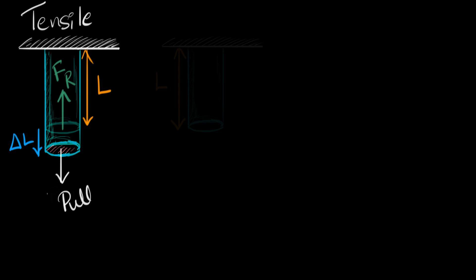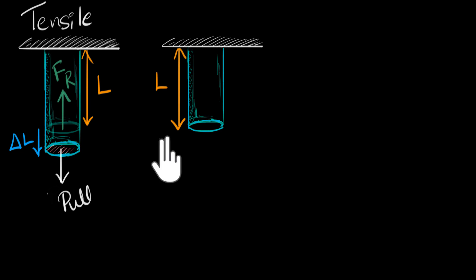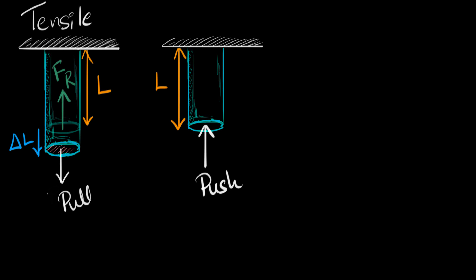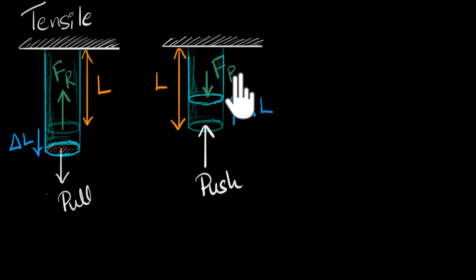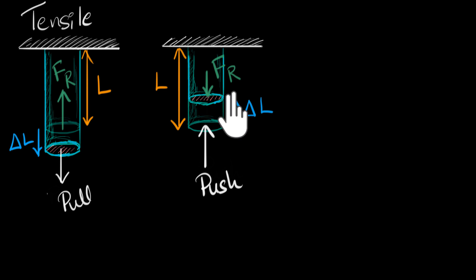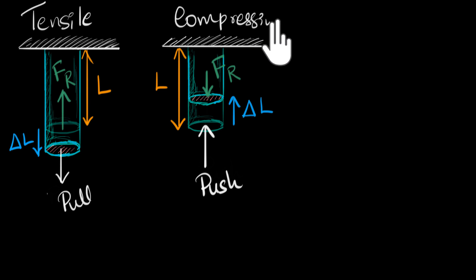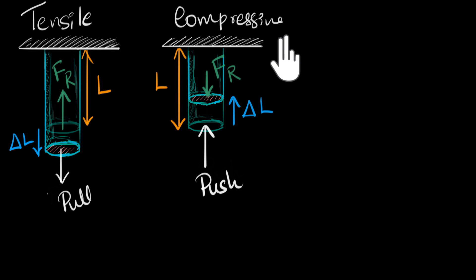Another thing you could do to the same rod — instead of pulling, we can now push on it. When you do that, the rod gets compressed. Again, a strain delta L by L is generated, and the rod will try to undo that by generating a restoring force in the opposite direction. If we calculate this stress as the restoring force divided by the cross-sectional area, we call this stress compressive stress, because the rod is being compressed. The resulting strain is called compressive strain.